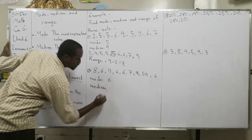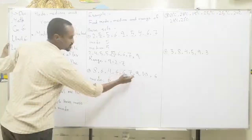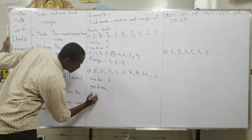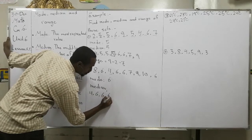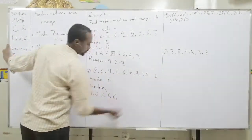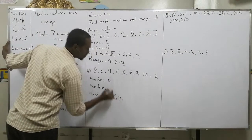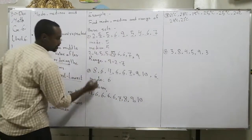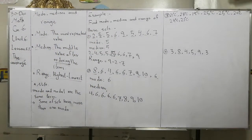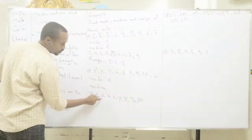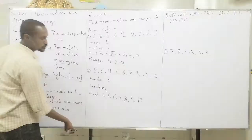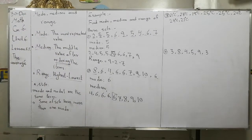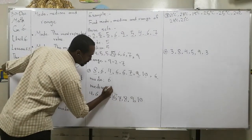Median — same way. We should order the numbers first, as we did the previous one. Starting with four, then six, six, six, six, seven, seven, eight, nine. We have nine numbers, so the number in the middle should be number five — the fifth value. On the left we have four, on the right we have four. That means the median is six.